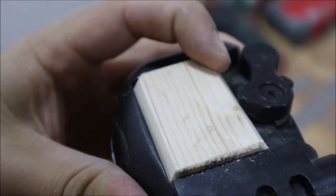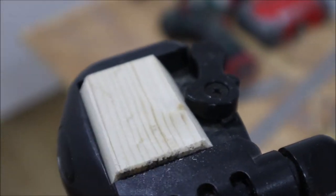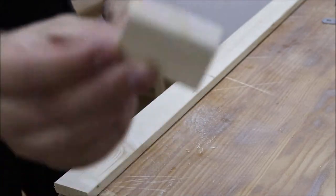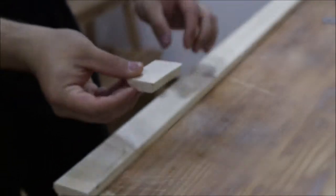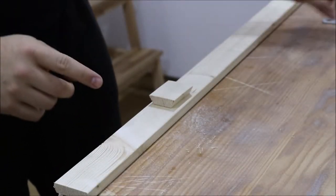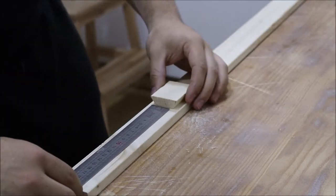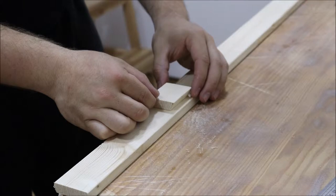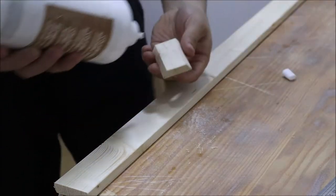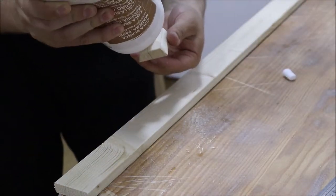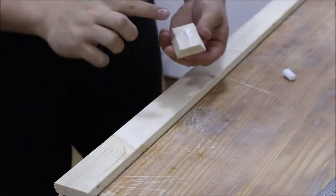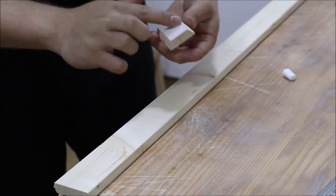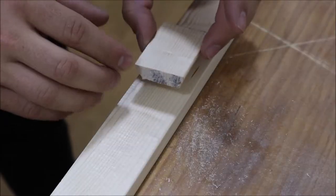So once you have your quick release plate you're going to maybe leave 20 centimeters or so. And you're going to want to glue it onto your piece of wood. Put some wood glue. Spread it around. And glue it in place.